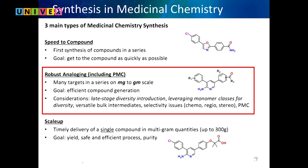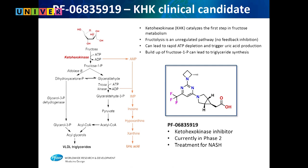This compound is in the clinic for diabetes and NASH. Another compound for NASH works differently. In the US we have high-fructose corn syrup in many foods, candies, and sodas. Fructose is metabolized by KHK — ketohexokinase — into fructose-1-phosphate, which eventually turns into triglycerides and fat. The problem is your body doesn't recognize this and won't stop it — it just converts all fructose into fat.